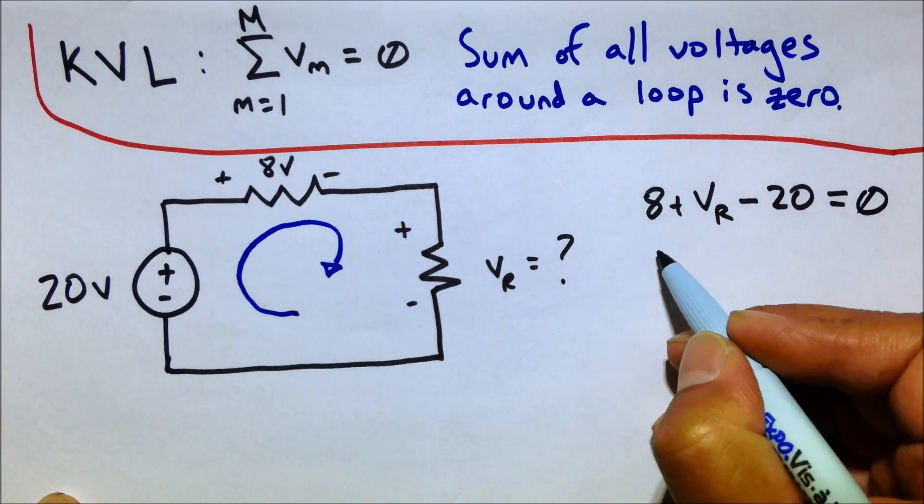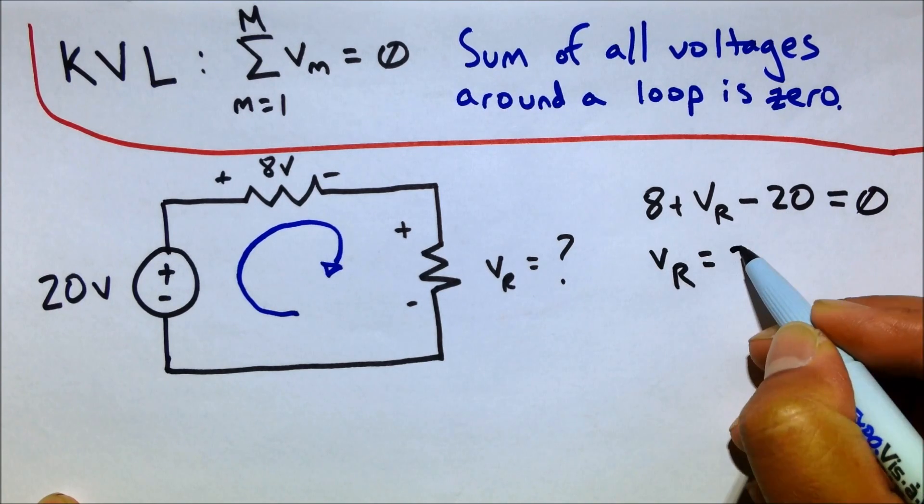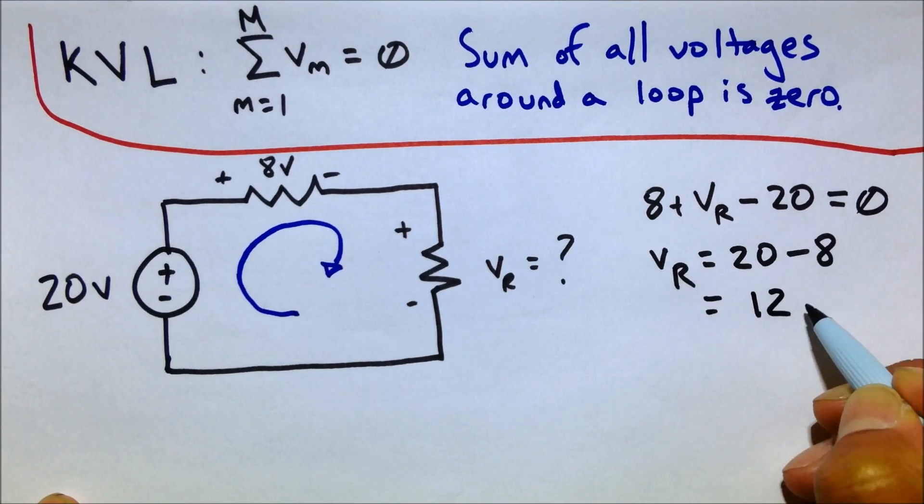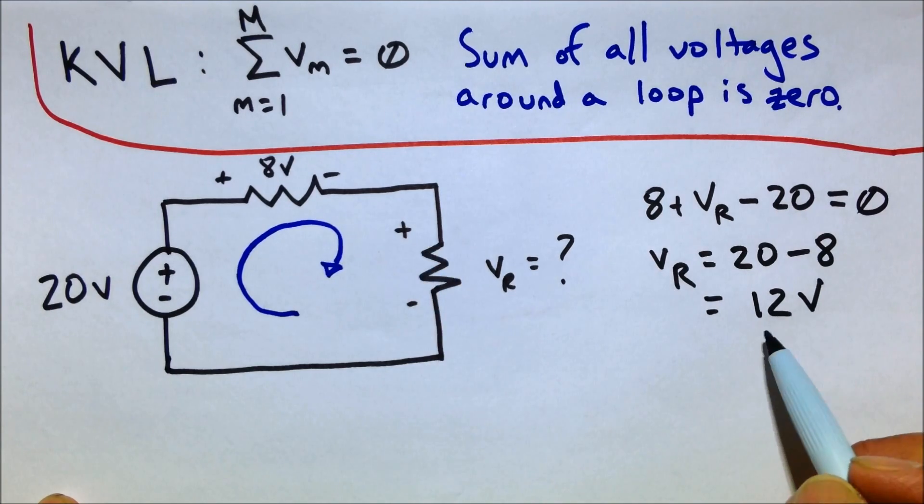So now we can do some algebra here. We're going to leave VR by itself, which means taking the 20 to the other side of the equation and taking the 8 to the other side of the equation. And we're left with VR. This voltage drop across that resistor equals 12 volts.